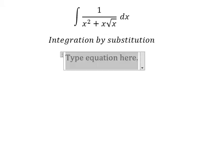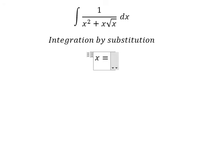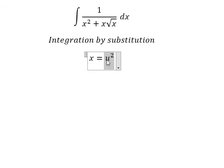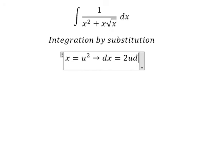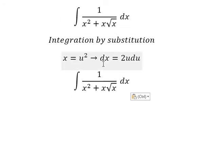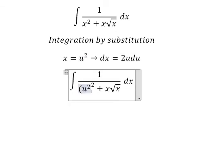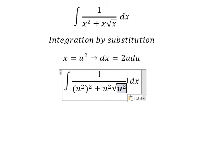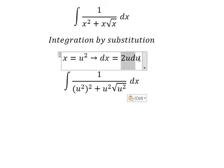I will let x equal to u squared, because I want to cancel the square root — that's why we use u squared here. Next, we take the first derivative for both sides. Then I will substitute u squared in for x throughout the expression.